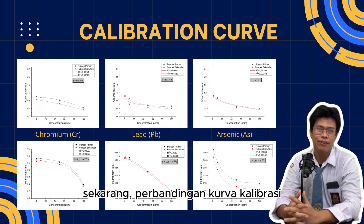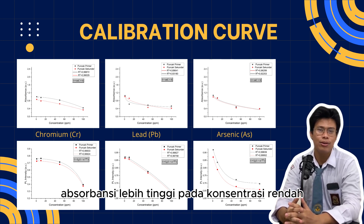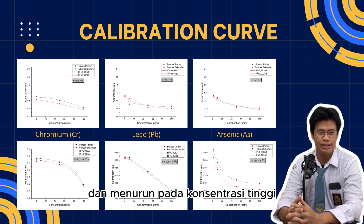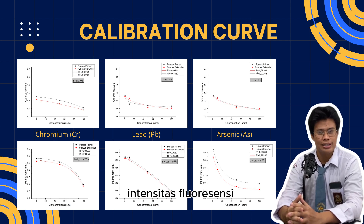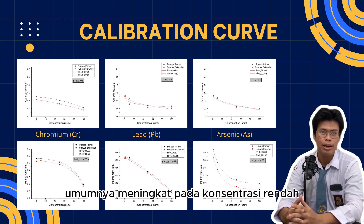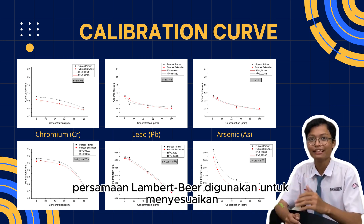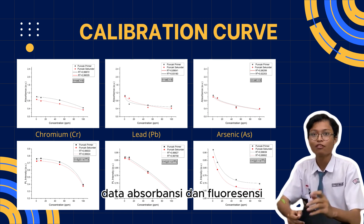For the calibration curve comparison, absorbance is higher at low concentration and decreases at high concentration, likely due to ion interaction and aggregation. Fluorescence intensity generally increases at low concentration but decreases at higher concentration. The Beer-Lambert equation is used to fit absorbance and fluorescence data.